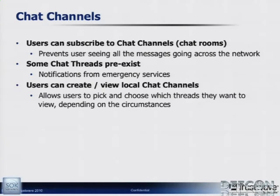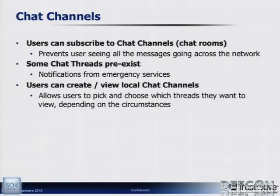Let's talk about chat channels. Users should be able to subscribe to chat channels — think of them as chat rooms — which prevents users from seeing all messages that go across the network. You need preexisting chat threads in the app so you can receive information from emergency services, so you know it comes from authoritative individuals. Users should also be able to create and view local chat channels as needed. When talking about revolutionary activity, you need to create channels on the fly. If users want to relay information about an event they just witnessed, they create a chat channel, people see it on their phone and subscribe, and their phones continue to push that information on.